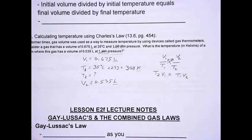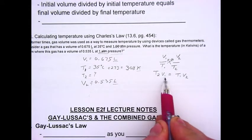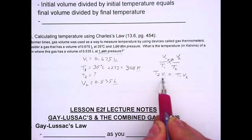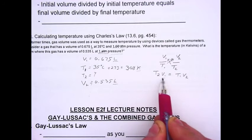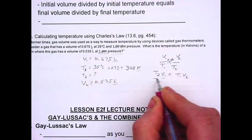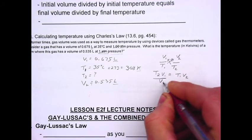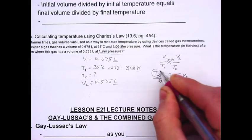Next, I need to isolate it by getting rid of V1. In order to get rid of a variable, I do the opposite of what it is doing to the unknown that I'm looking for. Since V1 is multiplying T2, I want to divide by V1 in order to get rid of it. Those cancel out, leaving T2 all by itself.